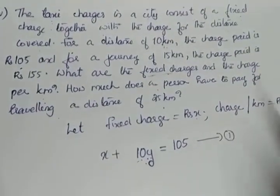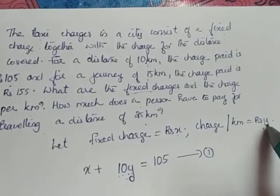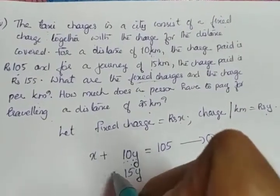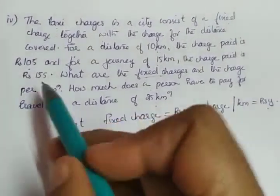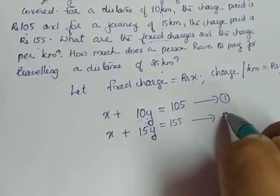This is the first equation. In the second case, it is said that for a journey of 15 km - for 1 km, it is Rs. y. For 15 km, it will be 15y plus the fixed charge, which is given as 155. So we are getting a pair of linear equations. We have to solve.